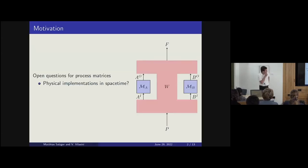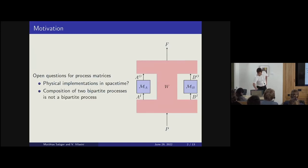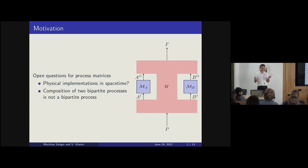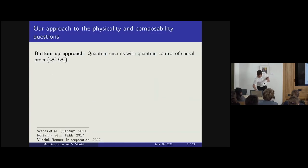The motivation for this talk is two open questions regarding process matrices. One is the physical implementations in a fixed acyclical spacetime — what can you do in this setting? And the other is that if you take two bipartite processes and try to compose them, you will not get another bipartite process. To answer these two questions, we looked at two different approaches: a bottom-up approach — quantum circuits with quantum control of causal order, or QCQC for short, proposed by Veksida last year, which are the subset of process matrices you can interpret as a circuit. And then we looked at causal boxes, a top-down approach proposed by Portmann — composable objects in a fixed spacetime.